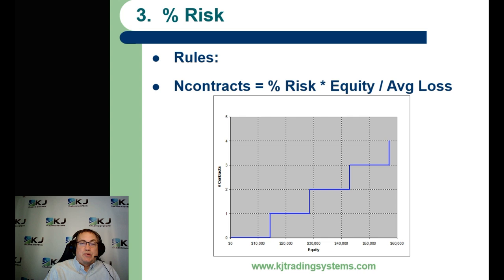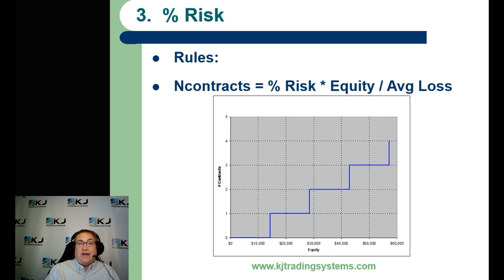Percent risk is somewhat similar to the dollars-per-contract method, but it uses the actual strategy statistics. You can use your average loss, which is what I use here, or your maximum loss. You set a percent risk — a lot of people say use one or two percent, some use five or ten percent. You multiply it by your equity, divide by your back-tested average or maximum loss, round it, and that gives you the number of contracts to trade. This also scales up with equity.